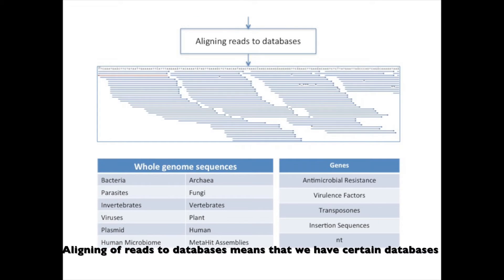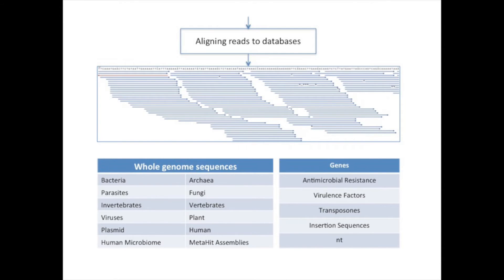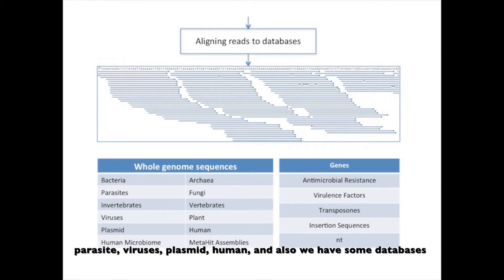Aligning reads to the databases means that we align our sequences against several databases of whole genome sequences, which include bacteria, fungi, vertebrates, invertebrates, parasites, viruses, plasmids, and humans.